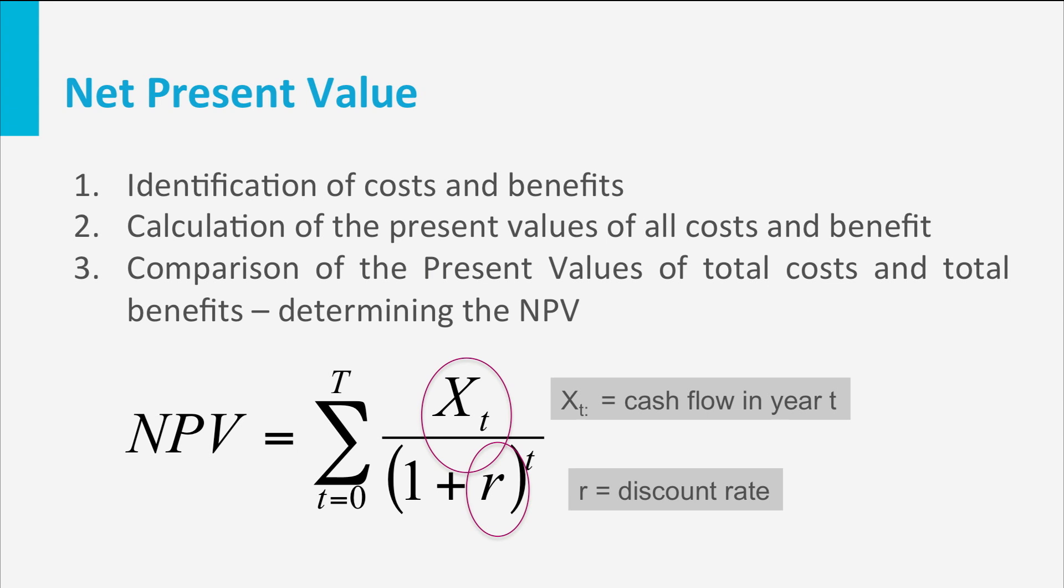In order to compare the total costs and the total benefits composed out of costs and benefits occurring at different points in time, we need to take a discount rate into account in the calculation in order to obtain the present values. We thus need to convert all cash flows from both costs and benefits in the future to values in the present.